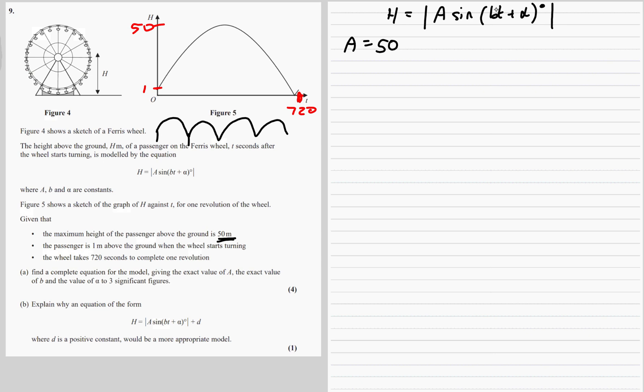So B is one quarter. When we're transforming graphs, if it's inside the bracket it does the opposite. So if we want to stretch it out, we need to times it by a quarter. If we want to stretch it out four times, it's going to go four times as far. We need to multiply by a quarter. So A is 50, B is a quarter.